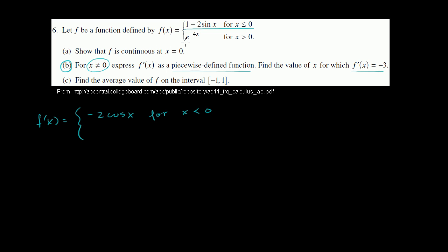And then for x greater than 0, we apply the chain rule to this case. The derivative of negative 4x with respect to x is negative 4, and the derivative of e to the negative 4x with respect to negative 4x is just e to the negative 4x. That's the derivative of the inside times the derivative of the outside. So it's negative 4 e to the negative 4x for x greater than 0.